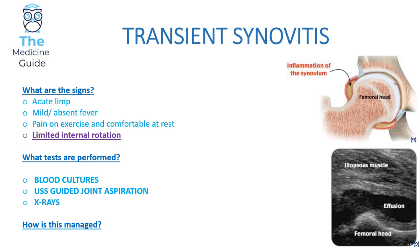In transient synovitis, the child will have limited internal rotation — something you really need to be aware of for your exams. The exact cause is unknown, though it's thought to be due to a viral infection. Transient synovitis is a diagnosis of exclusion, so nothing can confirm the condition. We perform tests to exclude septic arthritis and other pathologies, and once all others are excluded, we consider transient synovitis. In terms of management, we give NSAIDs, which usually helps to resolve it.